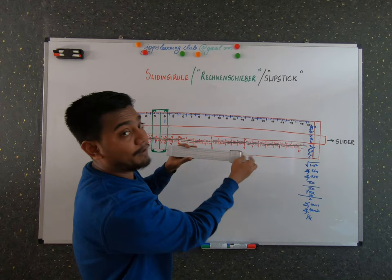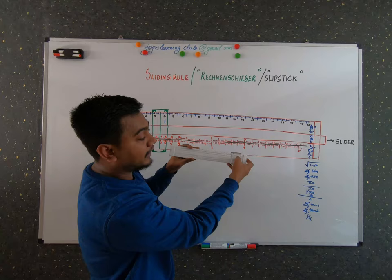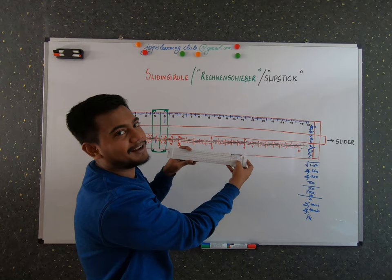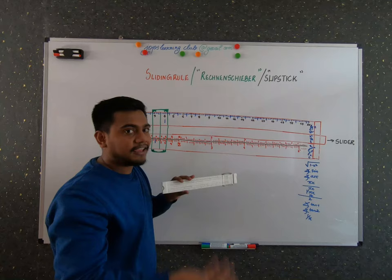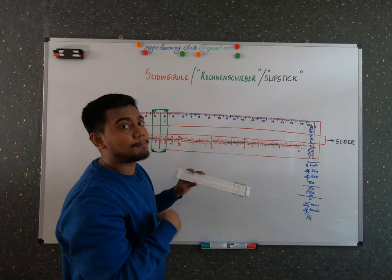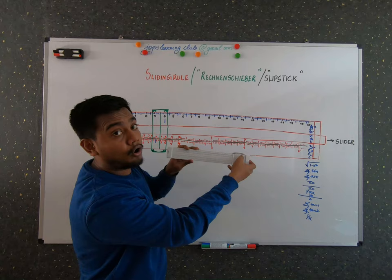When you keep x at 10, the upper scales also give you corresponding values. For example, to calculate x², you look at the x² scale at the black line: 10 squared is 100. If you go to the x³ scale, you get 1000, which is 10 cubed. For log x, when x is at 10, the log x scale reads 1 — so log 10 = 1. You can readily get these values just like a calculator.